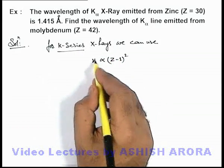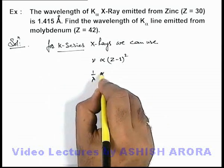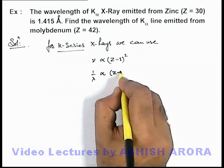So the frequency can be written as c by lambda, so here 1 by lambda can be written as proportional to (Z-1)².